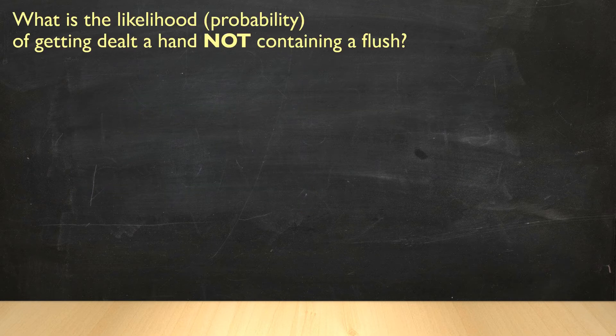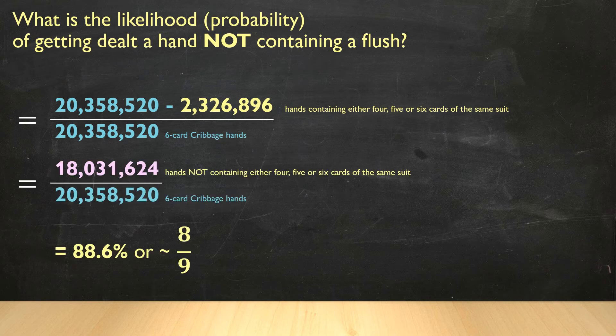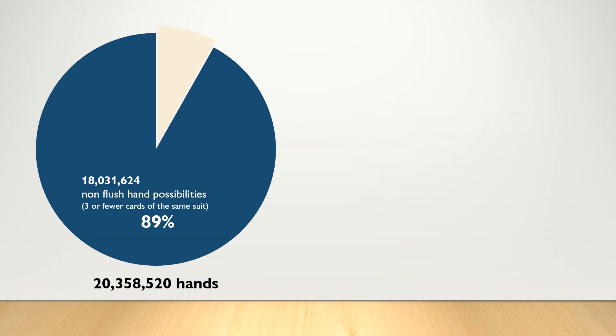Conversely, the number of hands that won't contain a flush is 88.6%, or approximately eight out of every nine hands won't contain a flush. We can view this as a pie chart. Our pie is the total number of possible six card hands, 20,358,520. And 89% of that pie is hands that don't contain a flush, three or fewer cards of the same suit. The small slice of pie that contains a flush possibility is 11%. Those are hands that contain four or more cards of the same suit.